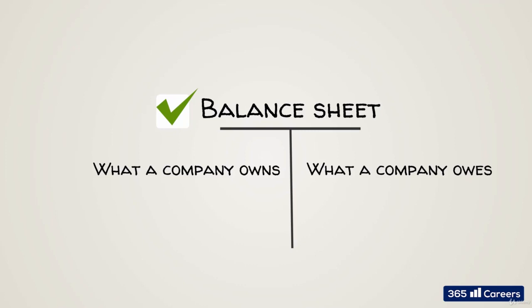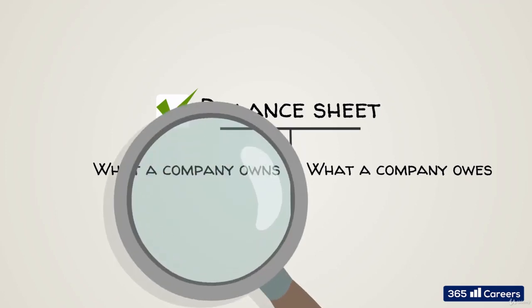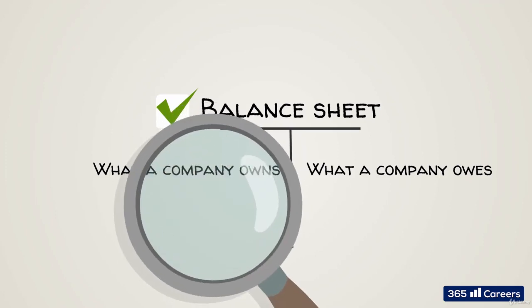It is important to remember that assets stand on the left and liabilities and equity are on the right side. In this lesson, we will describe the main asset accounts. Our goal is to understand how these items contribute to a company's business cycle and the nature of the asset accounts in a balance sheet.